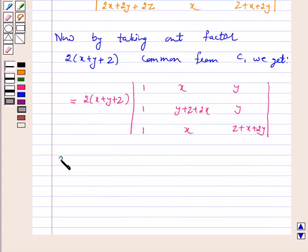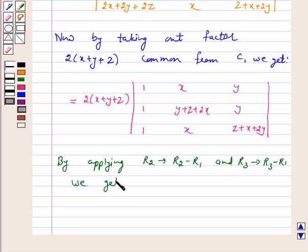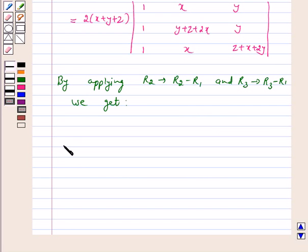By applying R2 goes to R2 minus R1 and R3 goes to R3 minus R1, we get: R1 is same, 1, x, y. R2 minus R1 gives y plus z plus 2x minus x is y plus z plus x, and y minus y is 0. R3 minus R1 gives 1 minus 1 is 0, x minus x is 0, and z plus x plus 2y minus y is z plus x plus y.